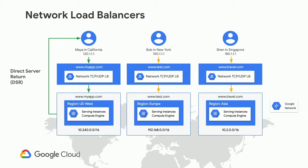Let's get started with network load balancers. These are load balancers operating at the network layer — layer three and layer four. They are external load balancers, so we talked about external versus internal — these are facing the internet. And these are regional load balancers, meaning they operate within Google Cloud regions.